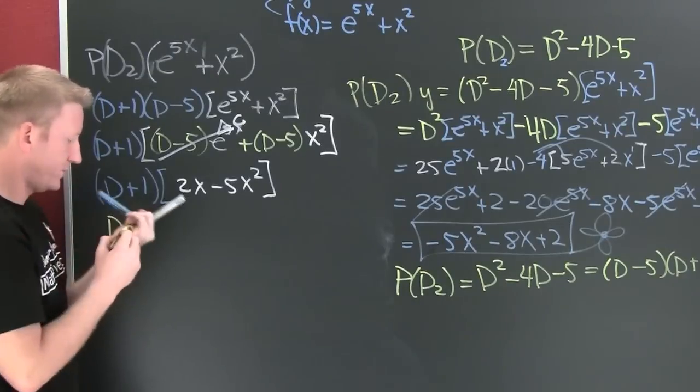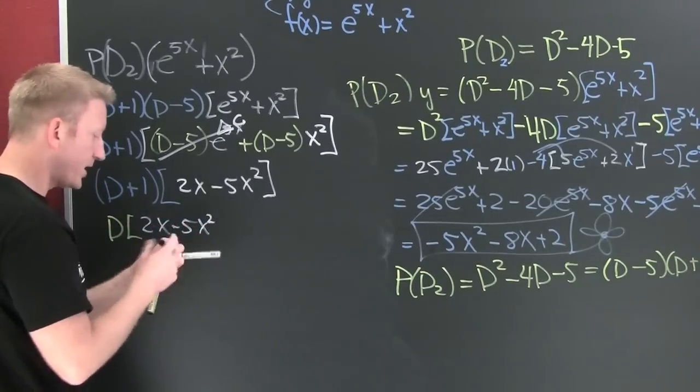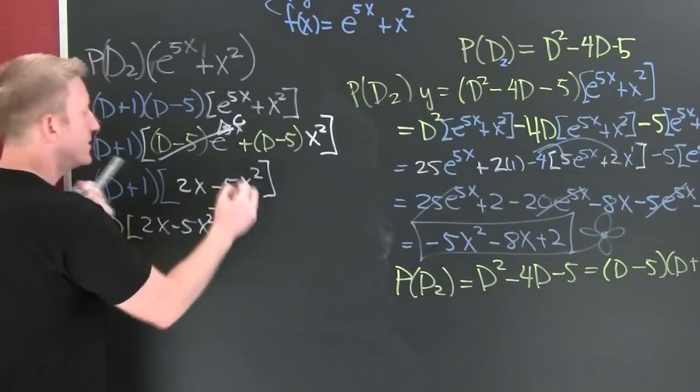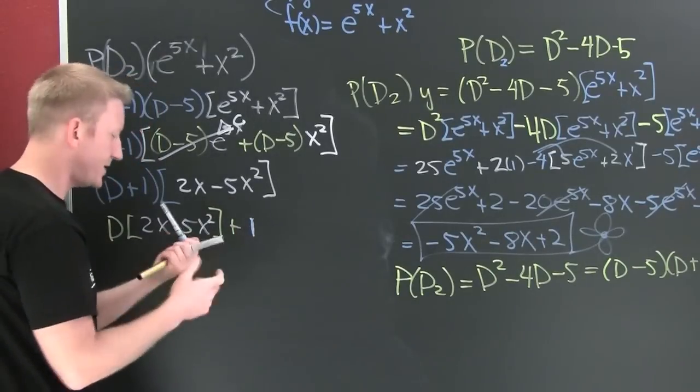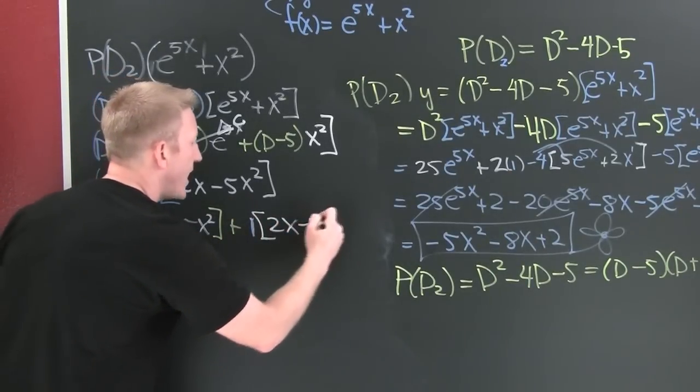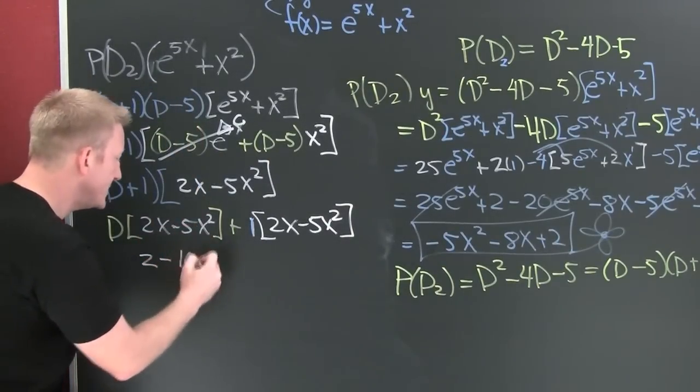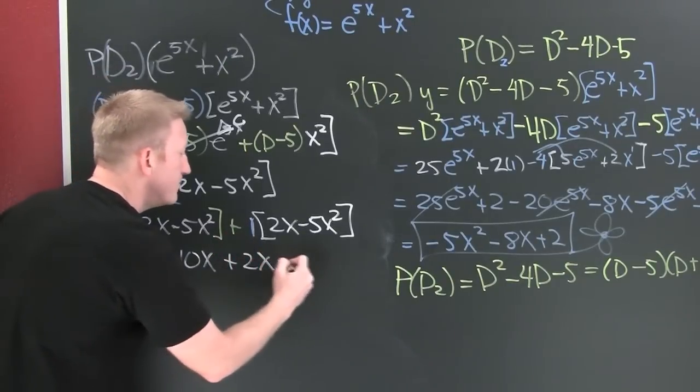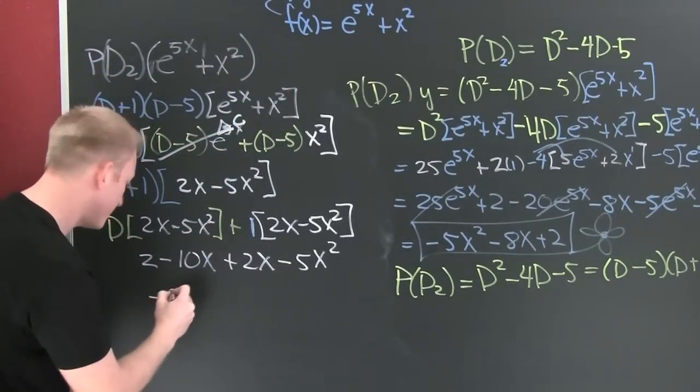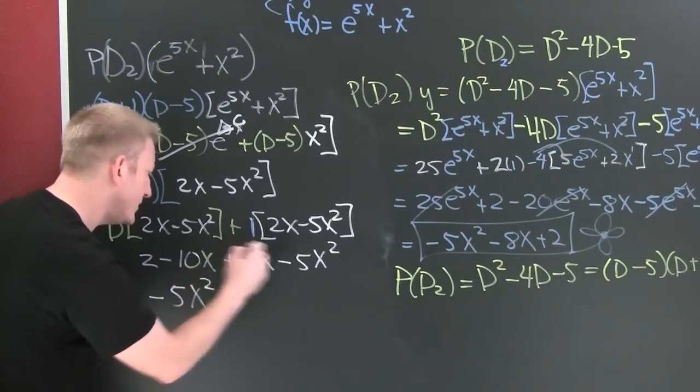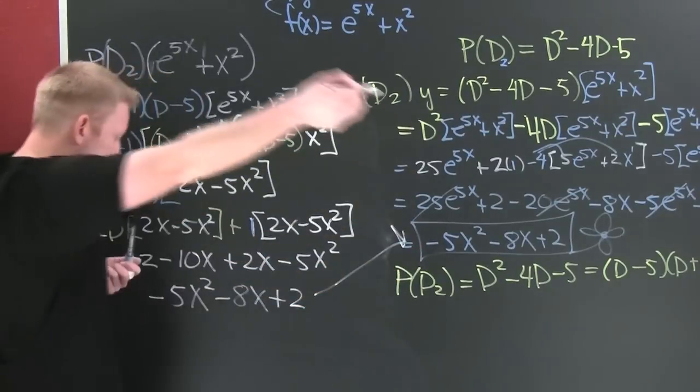Finish him. So now I can take one derivative of 2x minus 5x squared, and then I'm going to add it to plus one of those. One times 2x minus 5x squared. Finish him. A derivative of this is 2 minus 10x, and then plus 2x minus 5x squared. Gather, collect, and combine. And here we find that we get what we need: minus 8x plus 2. Did we get the same thing?